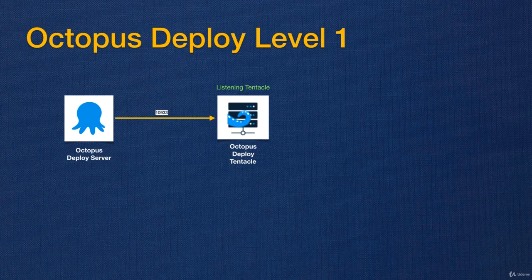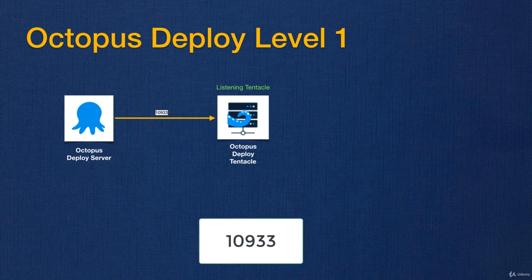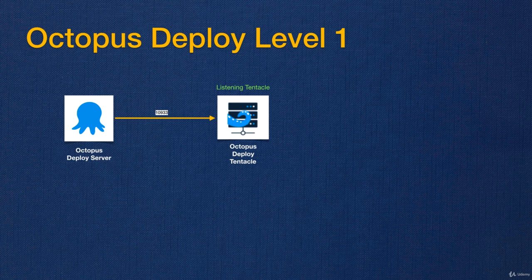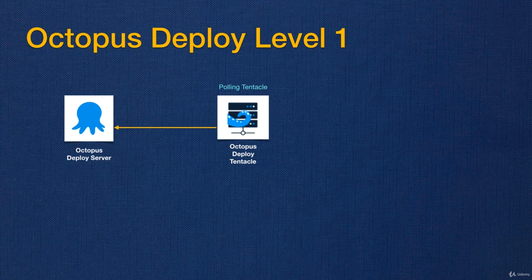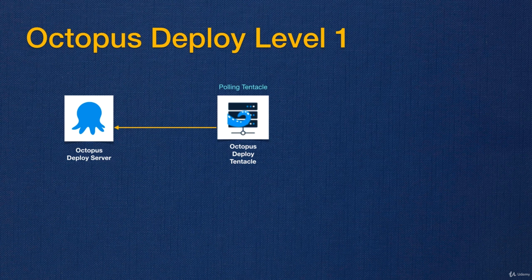The first type, recommended by Octopus Deploy, is the Listening Tentacle. In this case, the Tentacle sits and listens on port 10933. Whenever there is a task to be performed, Octopus Deploy connects to the Tentacle, sends the command, and the Tentacle performs it. The other type is the Polling Tentacle, where the Tentacle periodically connects to the Octopus Deploy Server to check for any pending tasks.